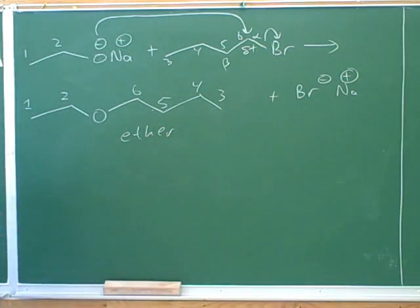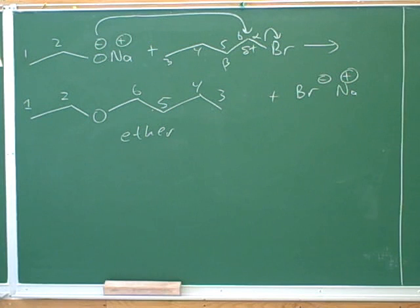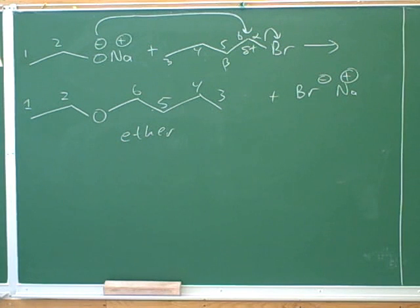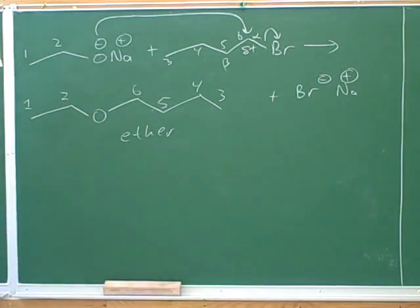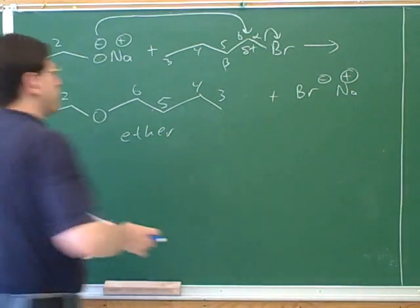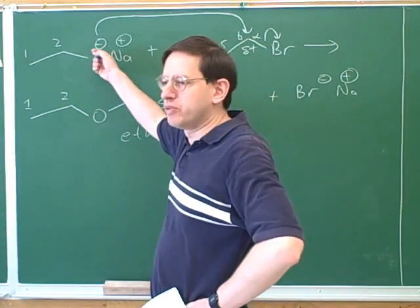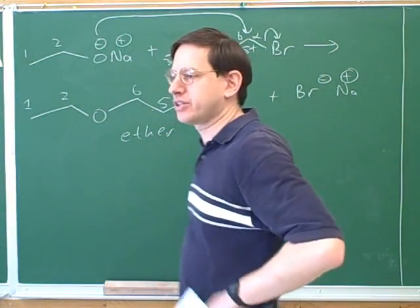Generally speaking, when you're doing organic chemistry, as you may have already noticed, the pattern of the course is every couple of weeks you learn about a new type of functional group. There are two main things you want to learn about that functional group: you need to learn how to make it, and then you have to learn what you can do with it. Right now we're learning how to make an ether — this is one good way to make an ether, just using a normal SN2 reaction.